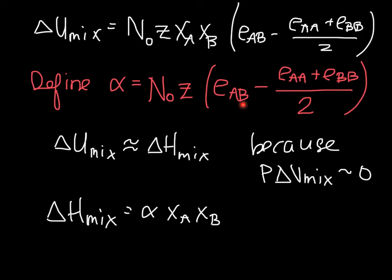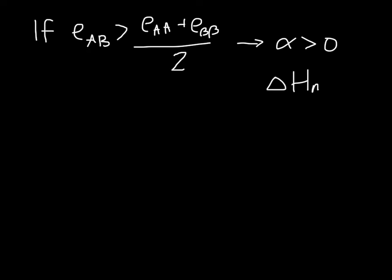We are comparing εAB, the energy of an AB bond, to the average energy of AA and BB bonds. If the AB bond energy is greater than the average of the AA and BB bonds, then alpha is greater than zero, delta H mix is greater than zero. This tells us that AA and BB bonds are preferred. This is less negative than these things.